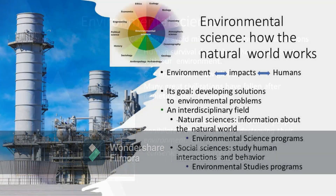Environmental science talks about how the natural world works — the environment's impact on humans, and humans' impact on the environment. Its goal is to develop solutions to environmental problems. Environmental science is an interdisciplinary field. It includes the natural sciences, which give information about the natural world, specifically through environmental science programs. For the social sciences, they study human interactions and behavior — environmental studies programs.